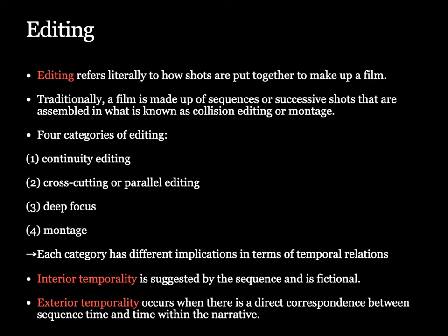Editing refers literally to how shots are put together to make up a film. As viewers, we are trained to watch films without paying attention to how they are constructed, or how each shot is connected to another. Traditionally, a film is made up of sequences or successive shots assembled in what is known as collision editing or montage. At its simplest, there are four categories of editing: continuity editing, cross-cutting or parallel editing, deep focus, and montage. A film can be constructed entirely using one of these four categories.